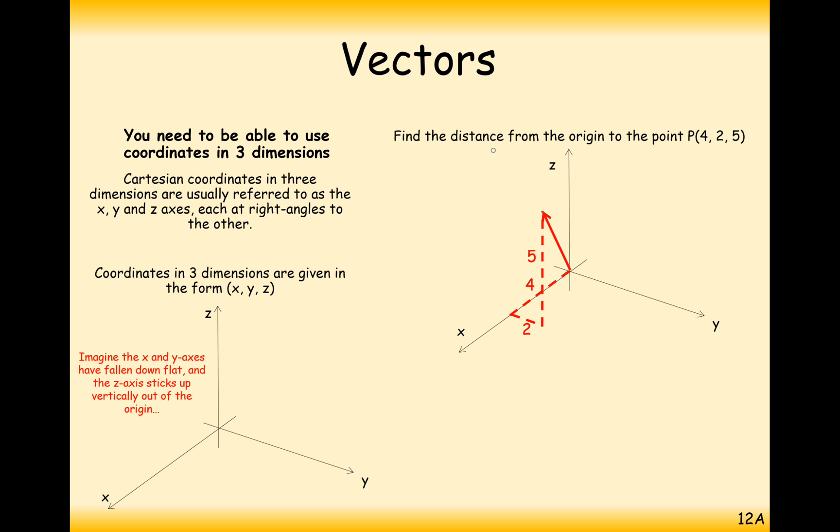What we're looking for in this question is to find the distance from the origin to the point P(4, 2, 5). In this case we can use a bit of 3D Pythagoras' theorem to work out the distance to the coordinate 4, 2, 5.